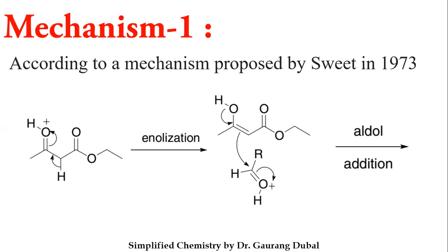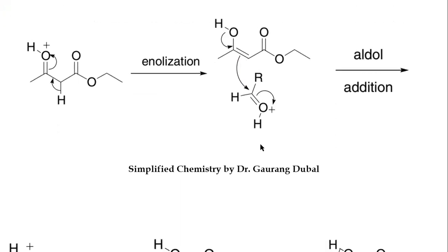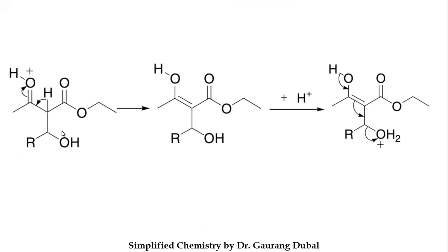There are two mechanisms. The first mechanism was proposed in 1973 by Sweep. You take ethyl acetoacetate, which undergoes enolization, and the enolate form attacks — a nucleophilic attack on the carbonyl carbon. As you can see here, the nucleophilic attack of the enolate to the carbonyl carbon leads to an aldol condensation product. This product may further get protonated in the acidic medium.